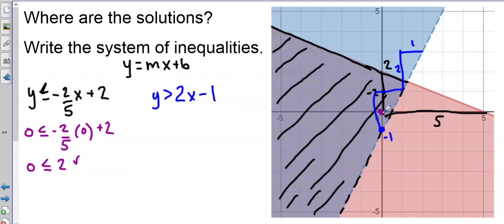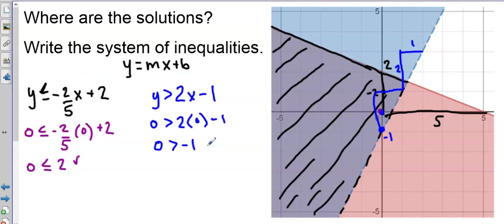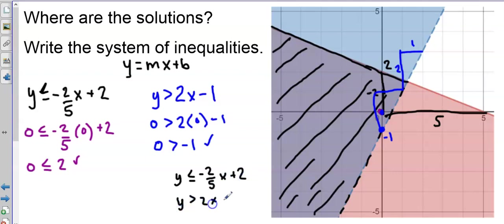If I wasn't sure about the shading, I could try the test point (0, 0). Substituting 0 for y and 0 for x: 0 > -1, which is a true statement — and (0, 0) is in the blue shaded region, so that confirms it. The system of inequalities graphed here is y ≤ -2/5 x + 2 and y > 2x - 1.